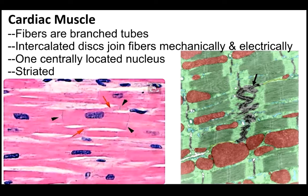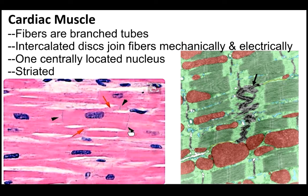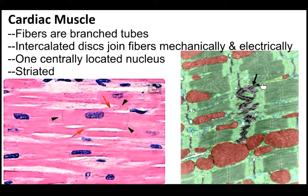Looking at cardiac muscle through a light microscope on the left, you can see the branched nature of the cells, single nucleus, and the intercalated discs where the black arrows are pointing. At this magnification and with this staining you can't really see the striations, which is why I added the electron micrograph image on the right. The intercalated disc is the dark area, and then you can see the striations — the red areas are mitochondria.